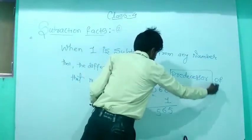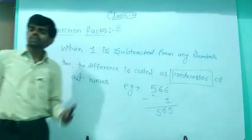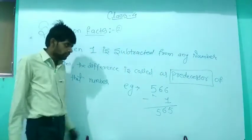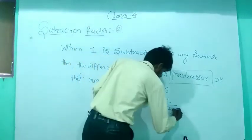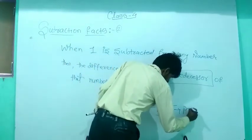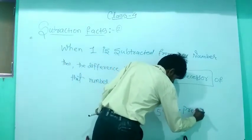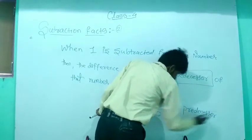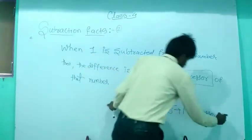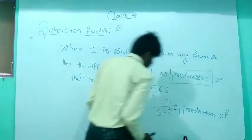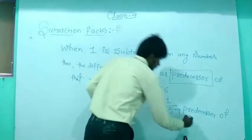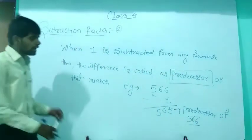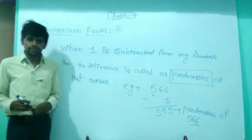If you subtract 1 from any number, you will get the predecessor of that number. So 565 is the predecessor of 566.